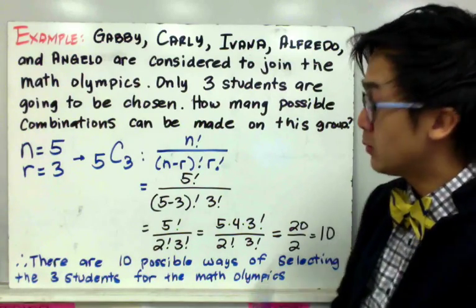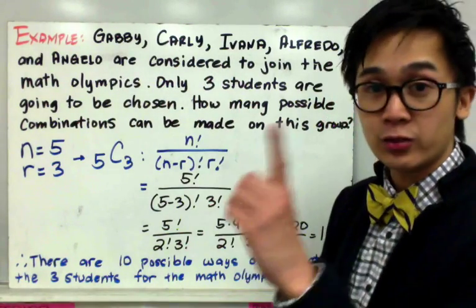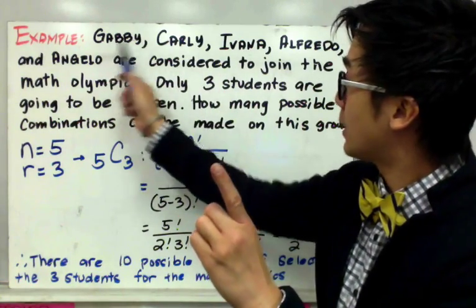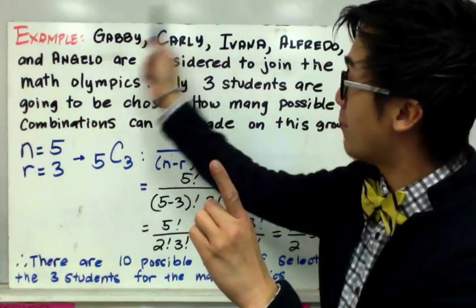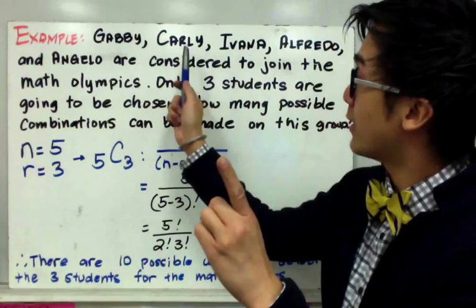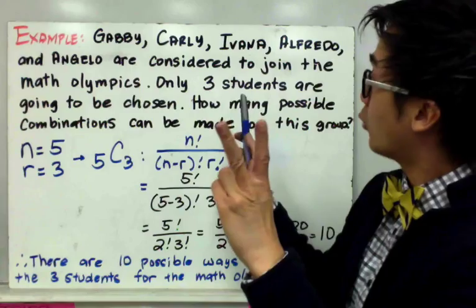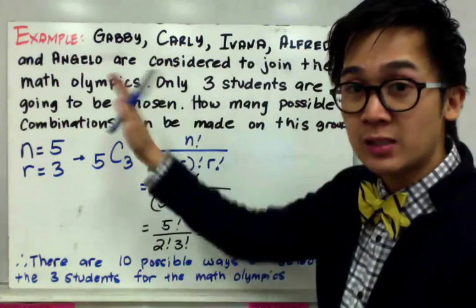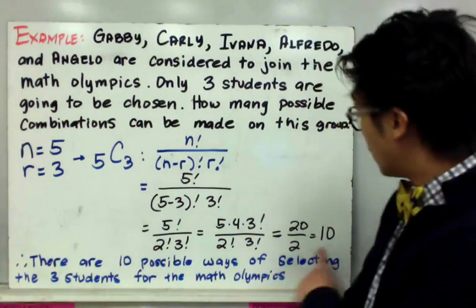10 is the number of possible ways. One possible combination is Gabby, Carly, and Ivana. However, if we pick Ivana, Gabby, and Carly, it doesn't count because we already considered them in our first group. The next group could be Gabby, Carly, and Alfredo, or Gabby, Carly, and Angelo. Repeat the steps to find all the patterns or arrangements, and it will total 10 possible ways.